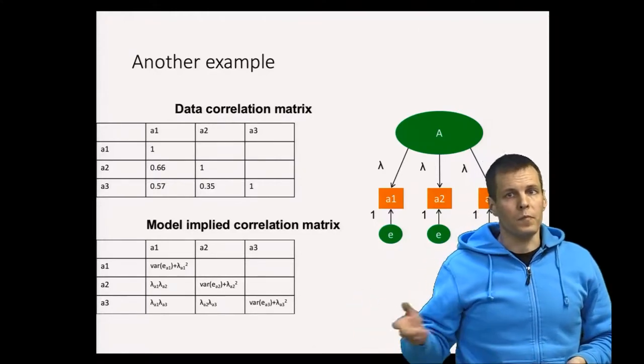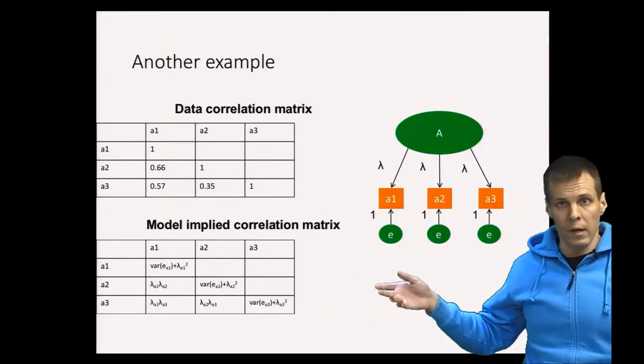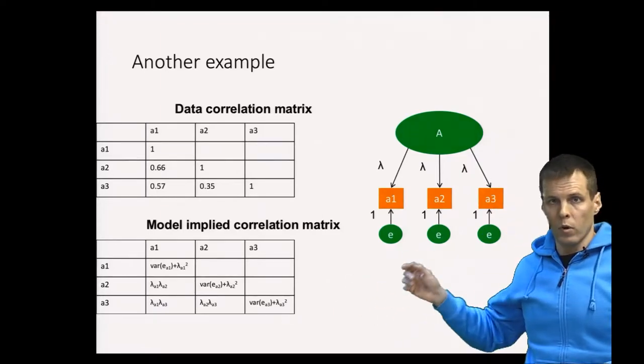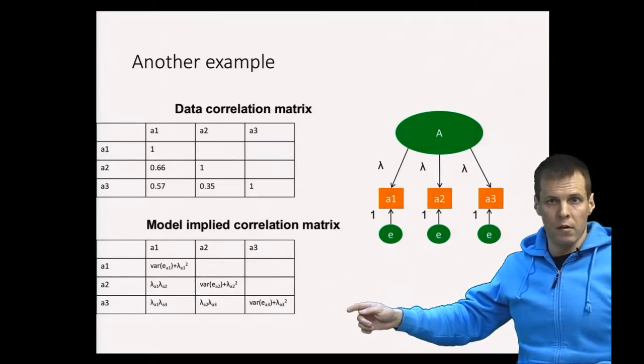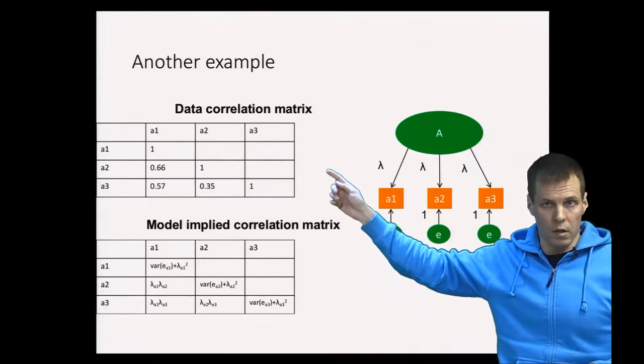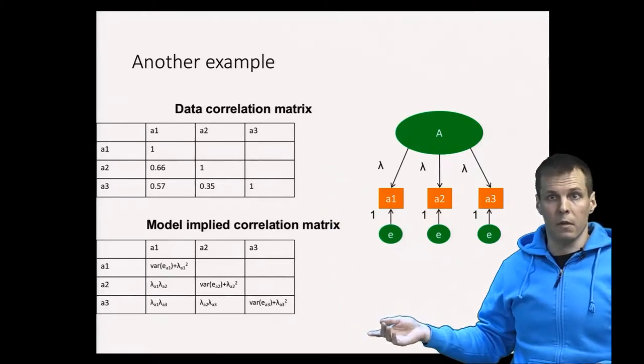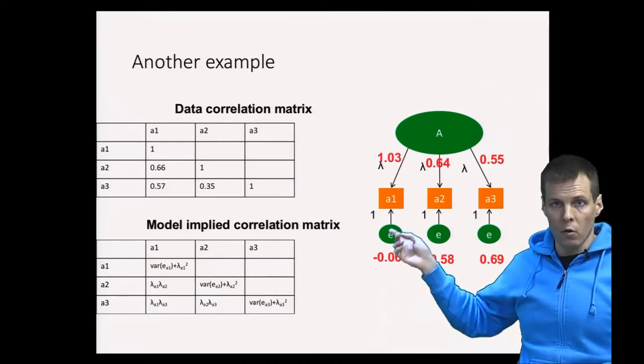Then this is our example so we have a three indicator factor model here. We have model implied correlation matrix here. We have here the empirical correlation matrix and we estimate the factor model. So we will get factor loadings.